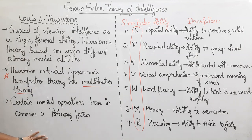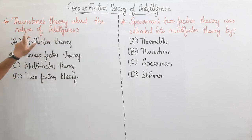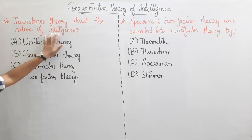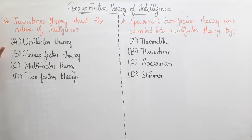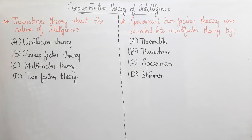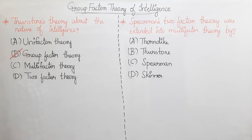If you are asked questions about Group Factor Theory of Intelligence, here is a practice question. Thurston's theory about the nature of intelligence — which theory is it? Option A: Unifactor theory, Option B: Group Factor Theory, Option C: Multi-Factor Theory, Option D: Two-Factor Theory. The correct answer is Option B — Group Factor Theory.